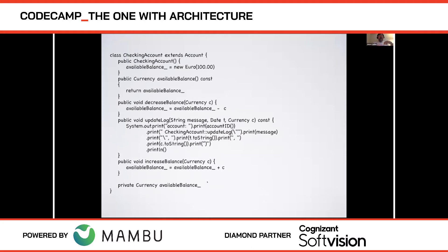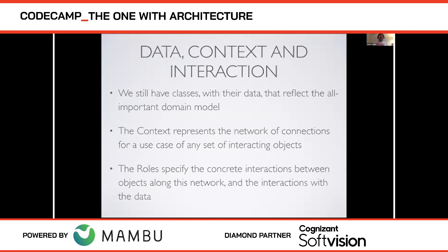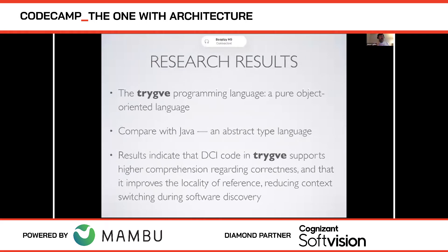We still have classes with their data because the domain model is important. The context represents a network of connections for a set of use cases of interacting objects, and the roles specify the concrete interactions between them along this network. Instead of just saying this is a theory, there are many projects around the world actually using DCI. There's a large game company in the UK orchestrating their whole build process using a DCI engine — people are finding that the ability to add new use cases or understand code is extremely powerful.